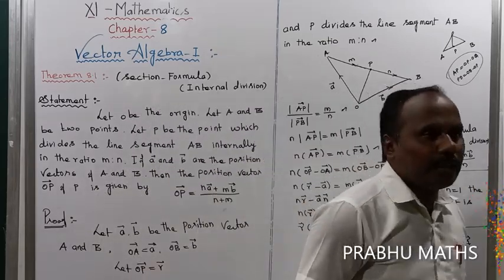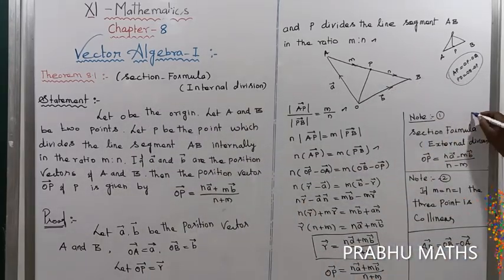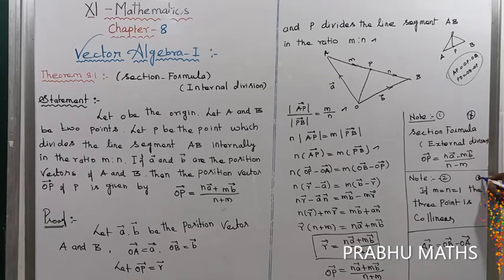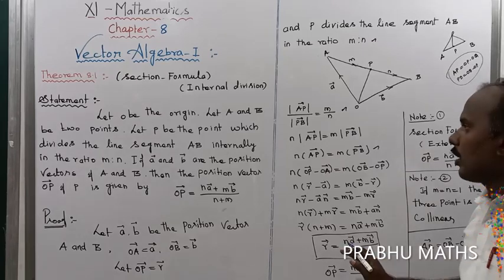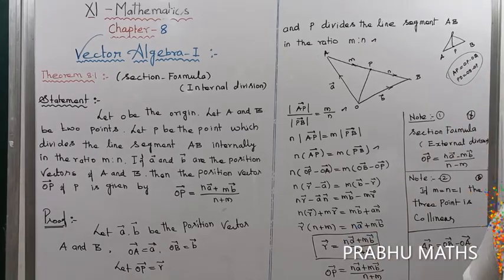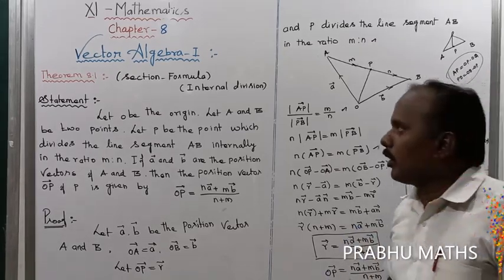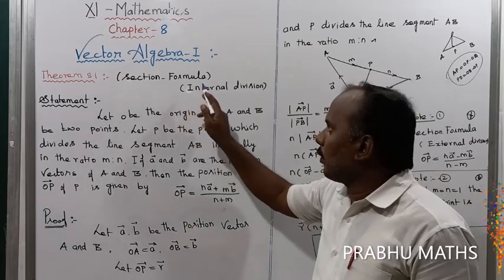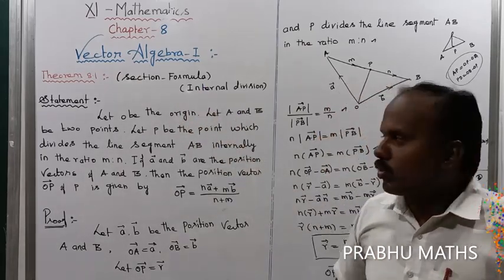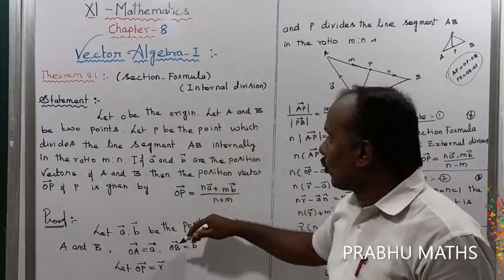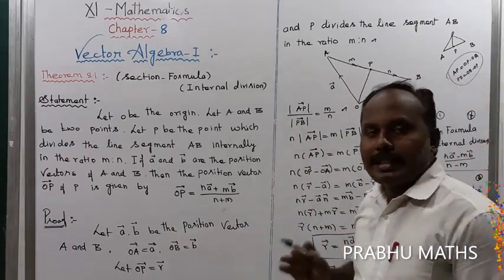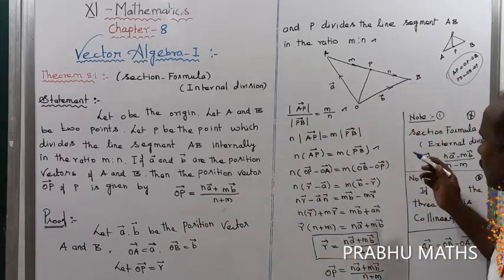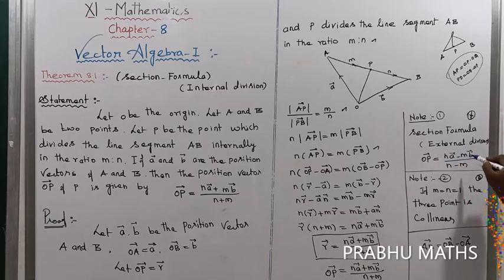This result gives us the internal division ratio vector. Similarly, we can derive the external division formula by replacing M with minus N, since the point lies in the opposite direction. This also connects to the midpoint vector and the collinear vector results.